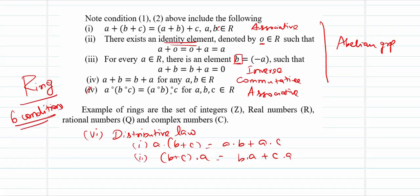Some examples of rings include the set of integers, the set of real numbers, the set of rationals, and the set of complex numbers — all with respect to ordinary addition and ordinary multiplication as the two binary operations.